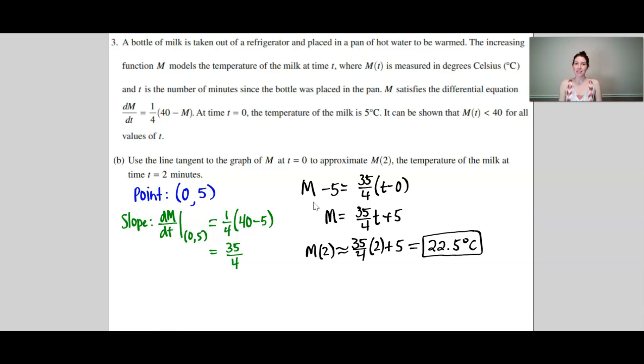Now I can write the equation of my tangent line, which is y minus y₁ equals m times x minus x₁. Plugging in t for x, M for y, and our point and our slope, I get this as my tangent line equation. I'm going to use this to approximate M(2) by plugging in 2 for t. Once I do that I get an approximation of 22.5 degrees Celsius at a time of 2.